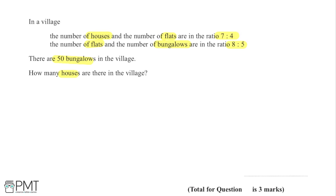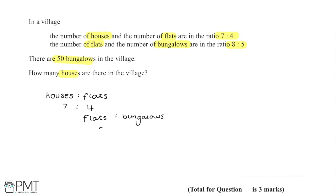With a ratio question like this, we're working with a couple of different ratios, so it's a good idea to get them all into the same place and write them out in an easier way to see instantly. We have houses to flats in the ratio 7:4, and then flats to bungalows in the ratio 8:5, written in the same column beneath.